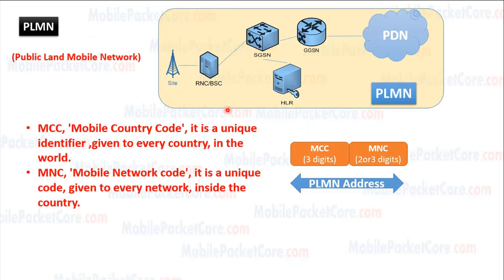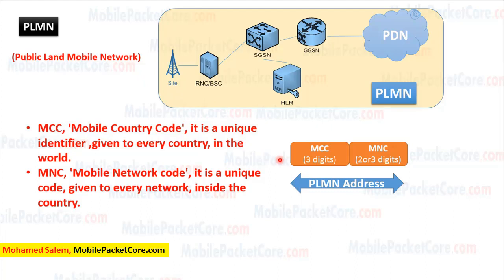First, let's talk about the PLMN. The PLMN is a unique identifier for every mobile network in the world. PLMN refers to Public Land Mobile Network, and it consists of the MCC and the MNC. The MCC refers to Mobile Country Code, and it is a unique identifier given to every country in the world. The MNC refers to Mobile Network Code, and it is a unique code given to every network inside the country. The PLMN is formed of the combination of the MCC and the MNC.